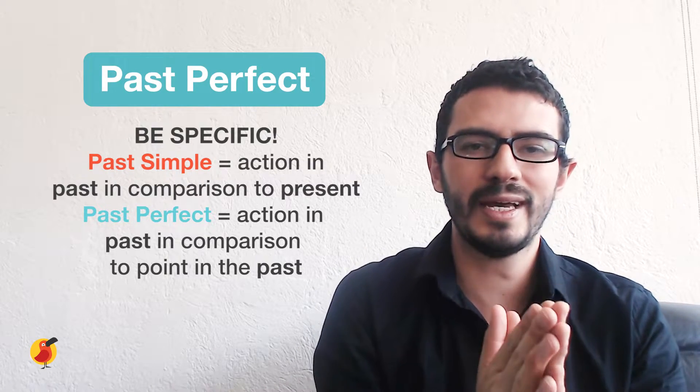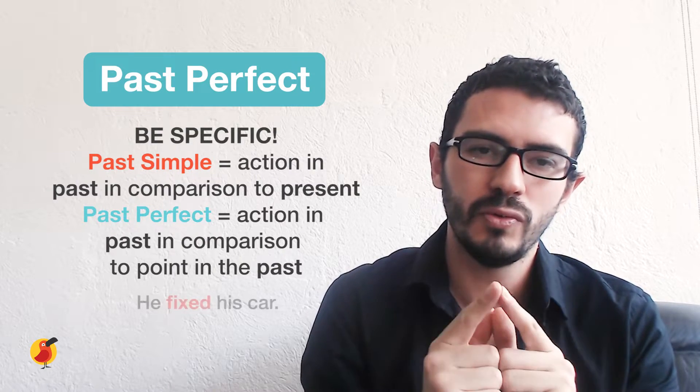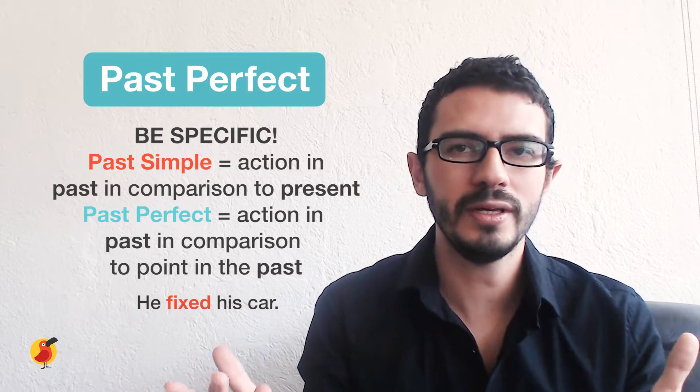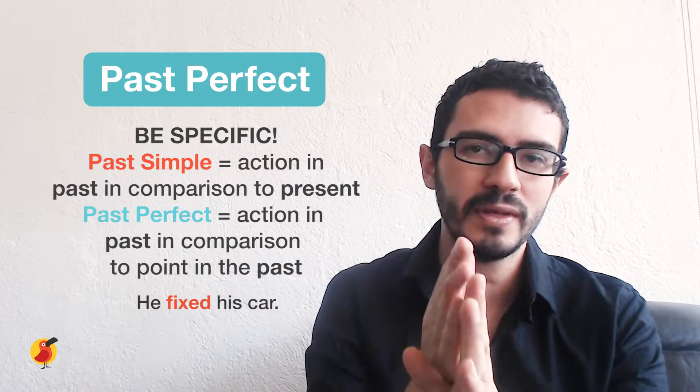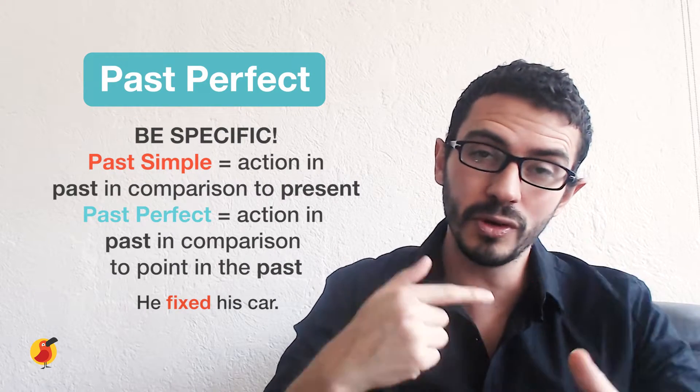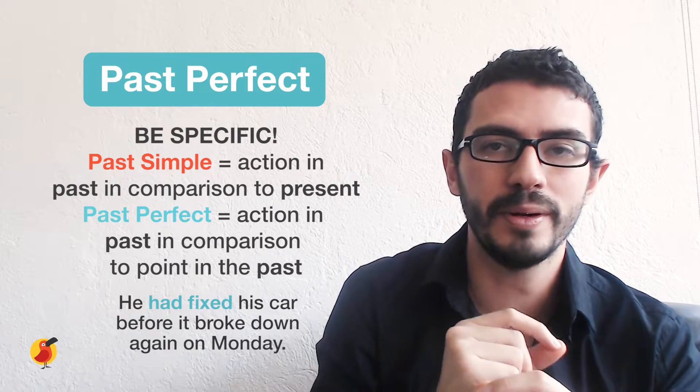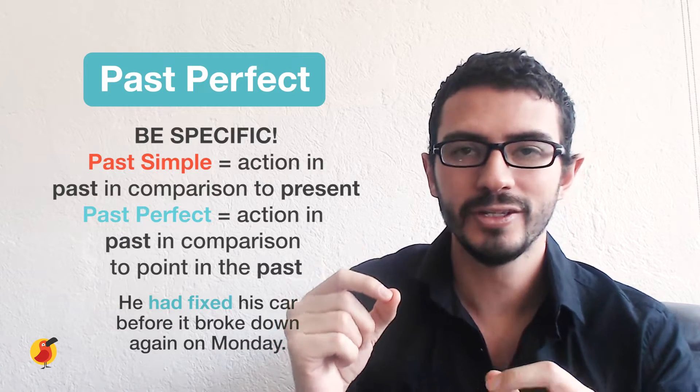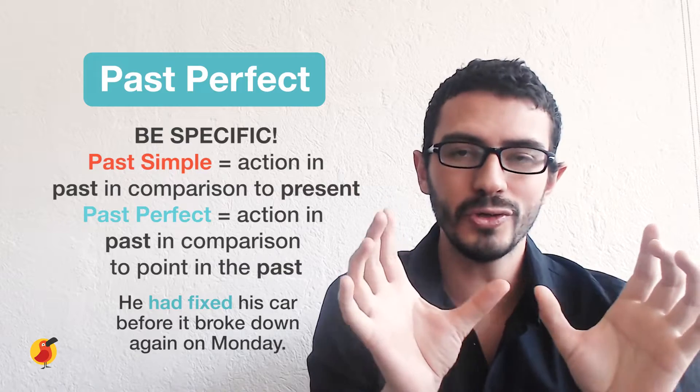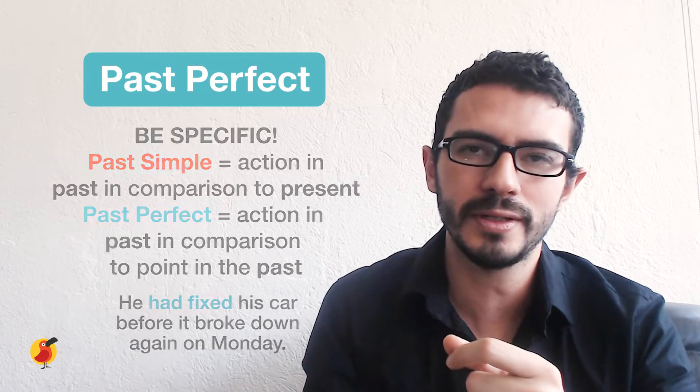So an example of a simple past would be something like this. He fixed his car. You're not being specific. You're just saying he already fixed his car some point in the past. But if you want to give more detail, he had fixed his car before it broke down on Monday. So now you're adding an extra piece of information. You're adding two ideas in one. We're going to make it more clear on the timeline.